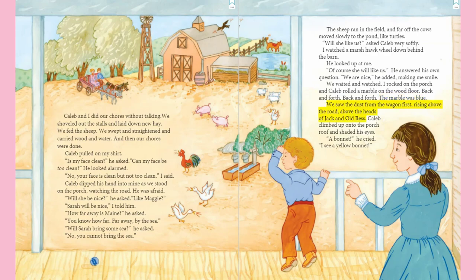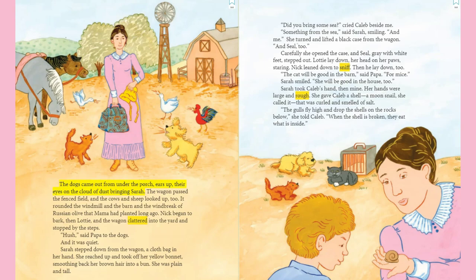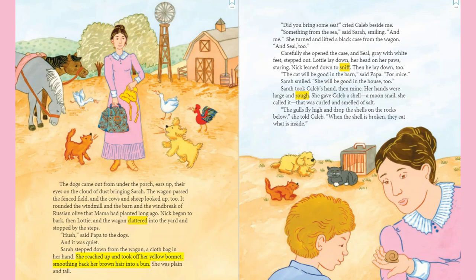We waited and watched. I rocked on the porch and Caleb rolled a marble on the wood floor, back and forth. The marble was blue. We saw the dust from the wagon first, rising above the road, above the heads of Jack and old Bess. Caleb climbed up onto the porch roof and shaded his eyes. "I see a yellow bonnet!" he cried. The dogs came out from under the porch, ears up, their eyes on the cloud of dust bringing Sarah. The wagon clattered into the yard and stopped by the steps. "Hush," said Papa to the dogs, and it was quiet.